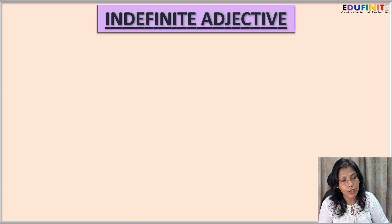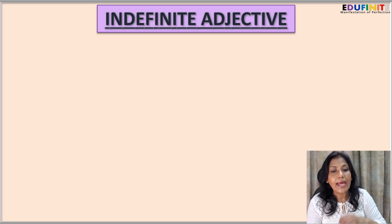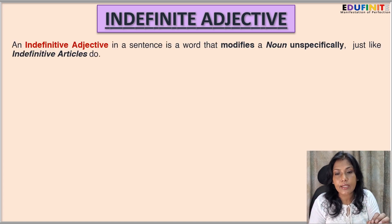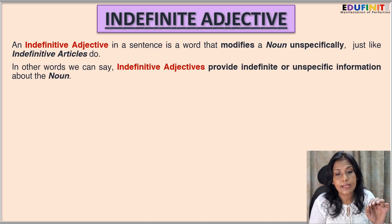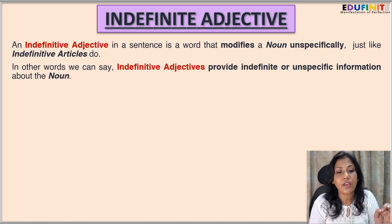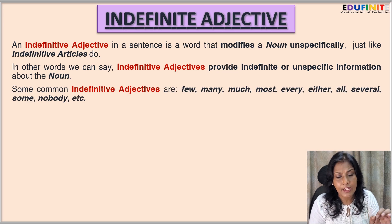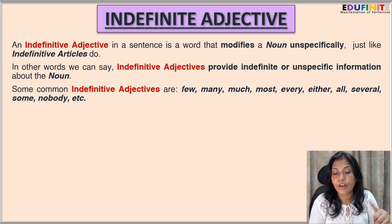Next we have indefinite adjective. An indefinite adjective in a sentence is a word that modifies a noun unspecifically, just like indefinite articles do. In other words, indefinite adjectives provide indefinite or unspecific information about the noun. Some common indefinite adjectives are: few, many, much, most, every, either, all, several, some, nobody, etc.